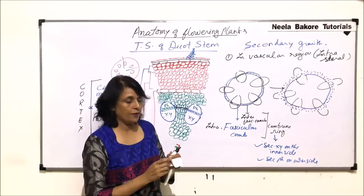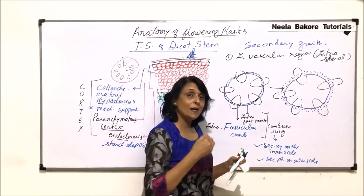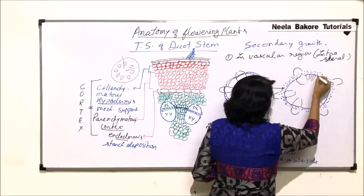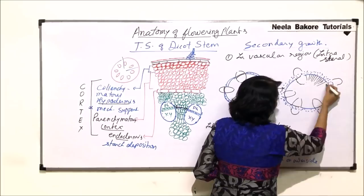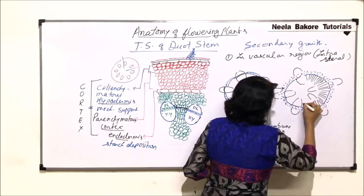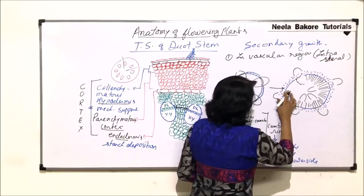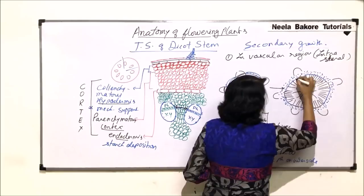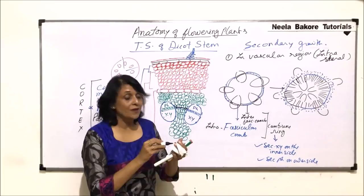Secondary xylem is produced on the inner side; the complete ring produces secondary xylem. Because of this, the primary xylem gets pushed inwards. The cambium ring produces secondary xylem all around, and the primary xylem is pushed further inward.